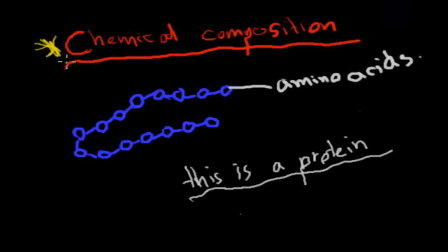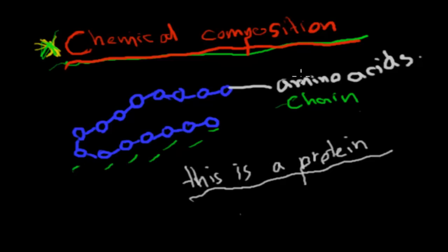The next part of the syllabus dot point is to describe the chemical composition. In this diagram shown here is an amino acid chain which are building blocks of proteins. Each of these circles are amino acids and together they make proteins. All enzymes are proteins.